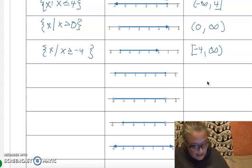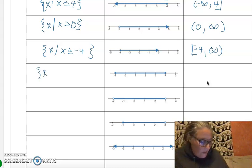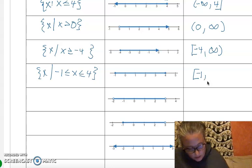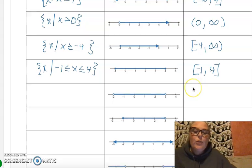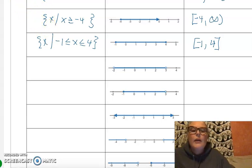The next problem is a betweenness statement — there's no arrow on the end, so it's all values between negative 1 and 4. The way we indicate that is with a betweenness statement: negative 1 is less than or equal to x, which is less than or equal to 4. In interval notation, the lowest value is negative 1 and it goes up to and including 4.